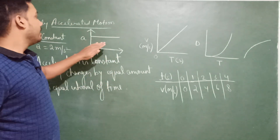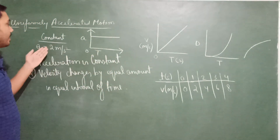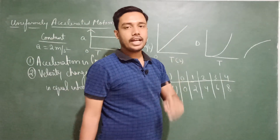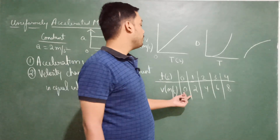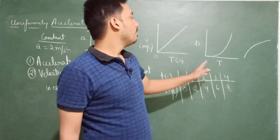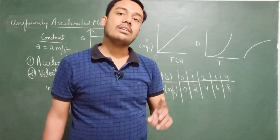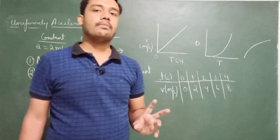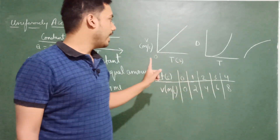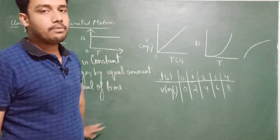So these are the three graphs: The acceleration-time graph is parallel to the time axis — because acceleration is constant. The velocity-time graph is a straight line inclined to the time axis — because velocity is changing by equal amount in equal interval of time. The distance-time graph is a curve — because distance is changing by unequal amount in equal interval of time. I hope uniformly accelerated motion is clear to you. All three graphs are important.